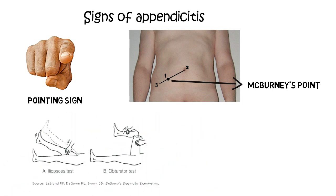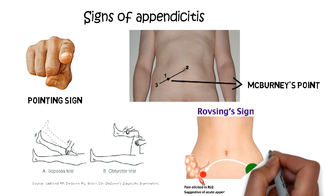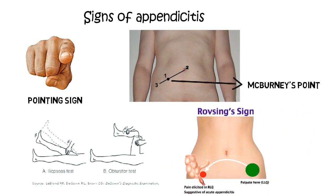The psoas sign and obturator test are also positive. The psoas sign means the patient lies with the right hip flexed for pain relief, as the inflamed appendix lies over the psoas muscle. The obturator test is positive when hip flexion and internal rotation causes spasm of the obturator internus, producing pain in the hypogastrium. Rovsing's sign is positive when palpation of the left lower abdomen causes pain in the right lower abdomen.